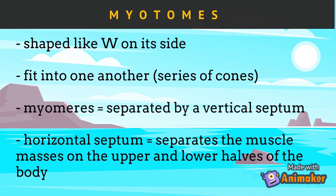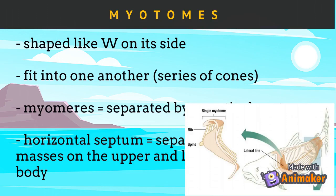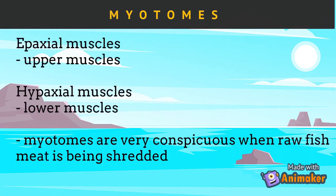Myotomes are shaped like a W on its side, fitting into one another like a series of cones. The myotomes on the right and left halves of the body are separated by a vertical septum; a horizontal septum separates the muscle masses on the upper and lower halves of the body. A myotome is composed of epaxial and hypaxial muscles. Epaxial muscles are above the horizontal septum, while hypaxial muscles are below the horizontal septum.